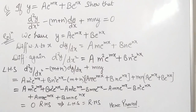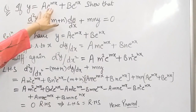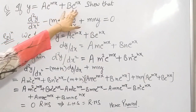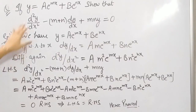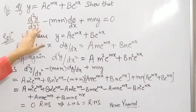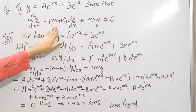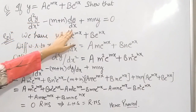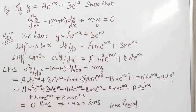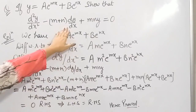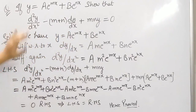Our first question is: if y equals to ae raised to power mx plus be raised to power nx, then show that d²y/dx² minus (m plus n) dy/dx plus mn·y equals zero. Here we need to find dy/dx and d²y/dx² to solve this question.